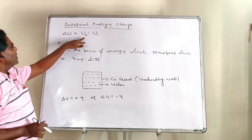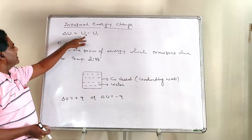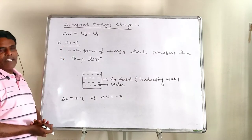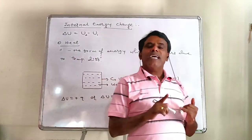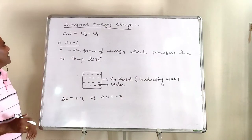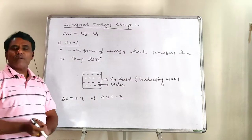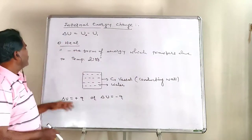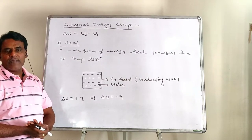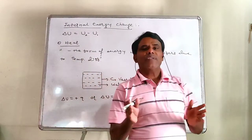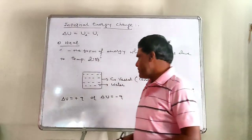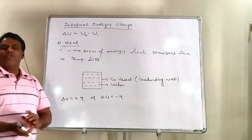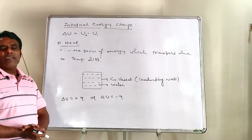Internal energy change delta U is equal to U2 minus U1, where U2 is internal energy in the final state and U1 is internal energy in the initial state. Heat is that form of energy which transfers due to temperature difference from one point to another. It is measured in terms of change in temperature — what was the initial temperature and what is the final temperature — and by measuring these temperatures, the amount of heat involved can be calculated.